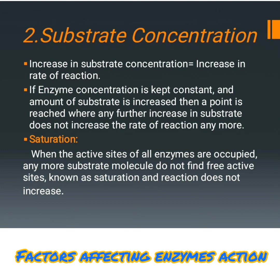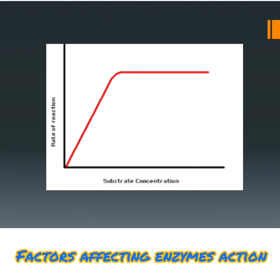The term saturation can be explained as: when the active sites of all enzymes are occupied, any more substrate molecules do not find a free active site — this is known as saturation, and no further reaction takes place. In this graph, it is shown that when substrate concentration increases, the rate of reaction also increases, and after that saturation takes place, which is shown by a straight line.